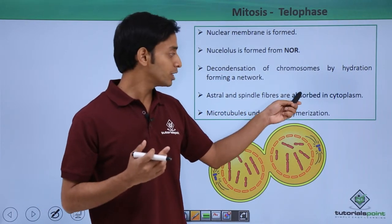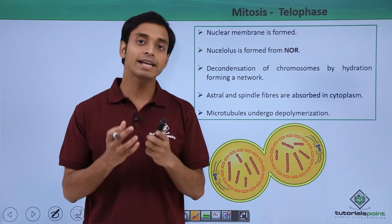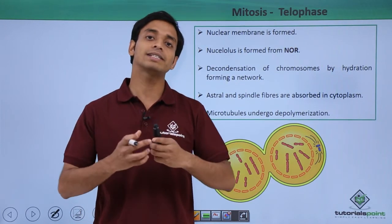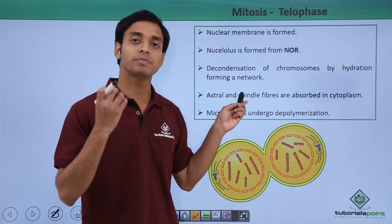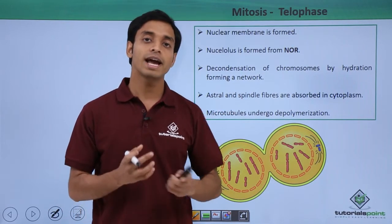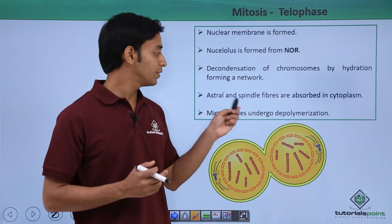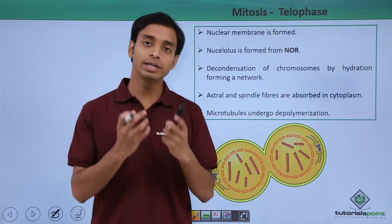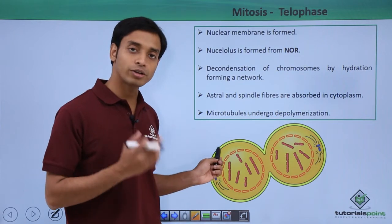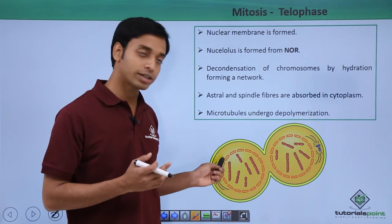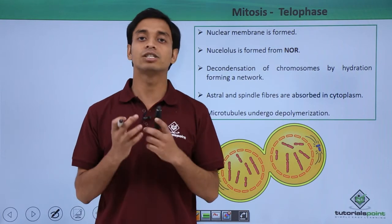The astral rays and spindle fibers which were formed initially slowly start getting dissolved into the cytoplasm. These spindle fibers, microtubules, and astral rays undergo depolymerization, causing the long microtubule structures to shorten and gradually dissolve into the cytoplasm.